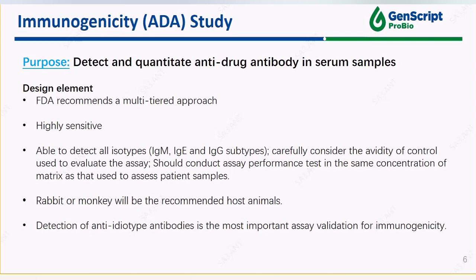Several aspects of immunogenicity assay development include high sensitivity and the ability to detect all isotypes. Other considerations include the ability of the control used to evaluate the assay, as well as effects of the matrix used to perform the assay. Rabbit or monkey will be recommended as host animals. In immunogenicity assay development, assay validation is a key step. Detection of anti-ID antibody is the most important assay validation for immunogenicity. Negative control usually includes a pooled serum from 5 to 10 non-exposed individuals.